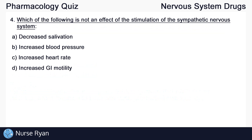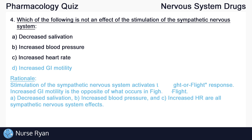Question number four: which of the following is not an effect of the stimulation of the sympathetic nervous system? The answer here is D, increased GI motility.